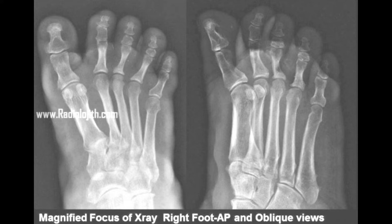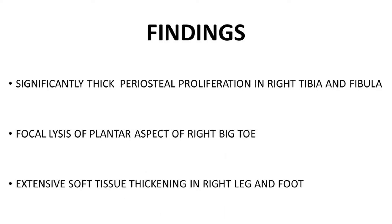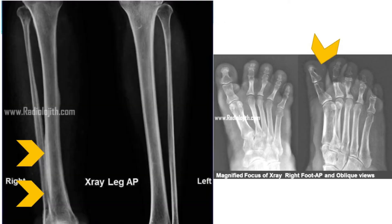The X-ray of the right leg — and I think X-rays of both legs are given. There is periosteal proliferation observed in the right tibia and fibula. Comparing with the left side, you can see the periosteal proliferation is very thick and is observed in the right tibia and fibula, but not in the left tibia and fibula. The periosteal reaction of the tibia and fibula is well recognized.